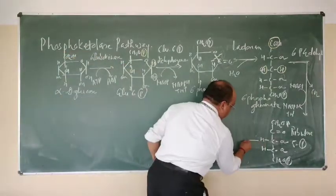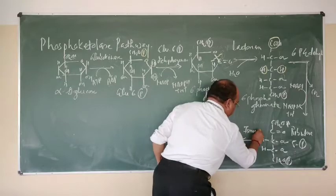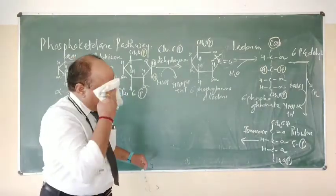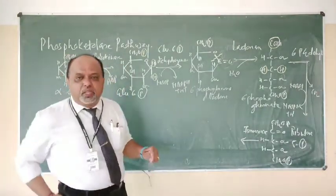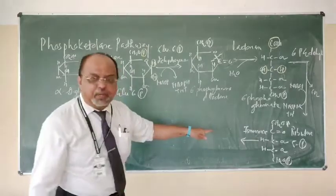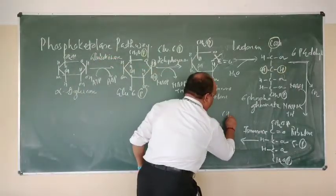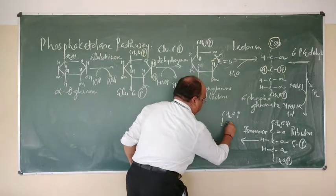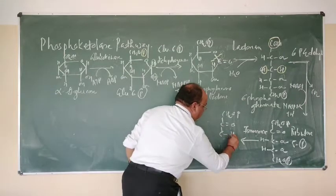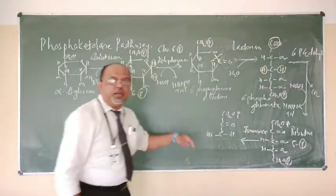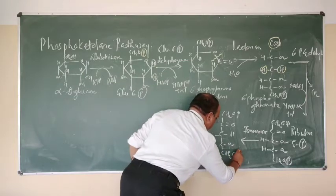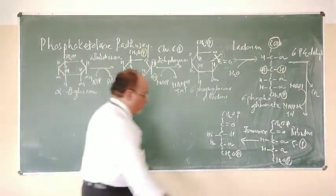In the subsequent reaction, an isomerization process occurs. By the enzyme Isomerase, Ribulose-5-Phosphate is isomerized to Xylulose Phosphate. The change occurs at carbon number 3 — the hydroxyl group which was on the right side is now on the left side. The resulting compound is Xylulose Phosphate.